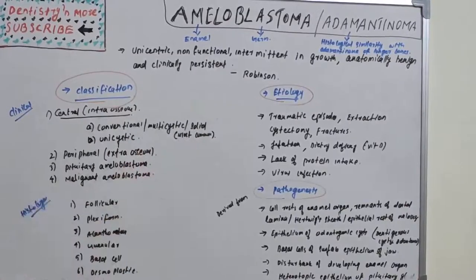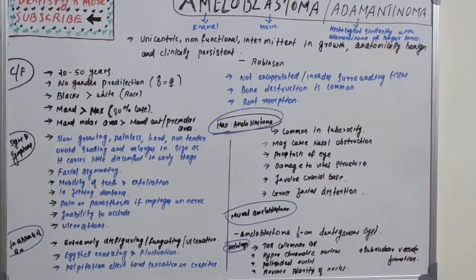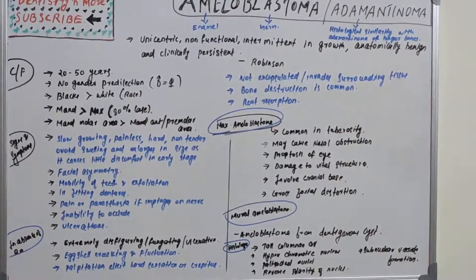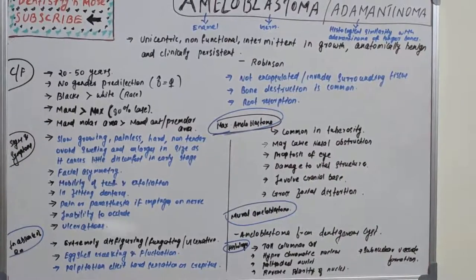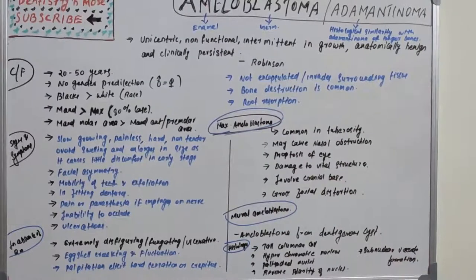Clinical features: most commonly seen between 20 to 50 years of age. There is no gender predilection — both genders are equally affected. However, Black race individuals are more affected than White race. The mandible is affected in approximately 80% of cases versus only 20% in the maxilla, and mandibular molar areas are more prone compared to anterior or premolar areas.